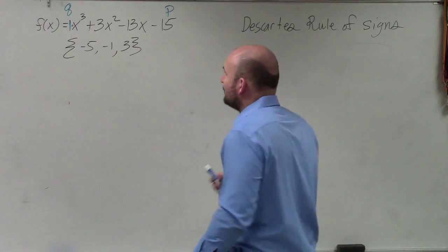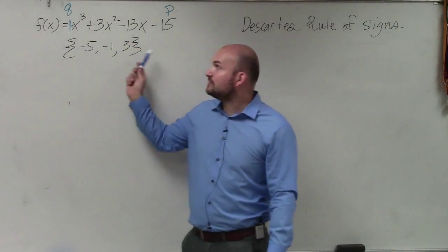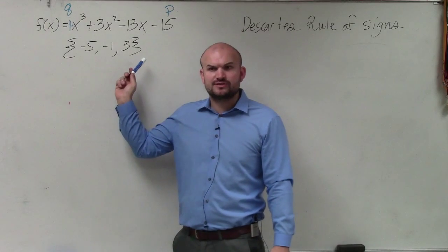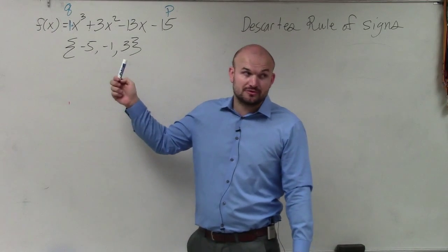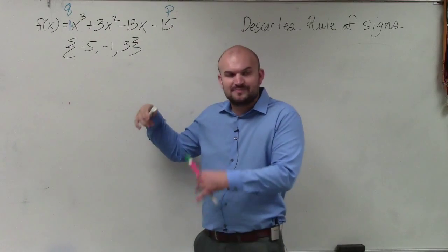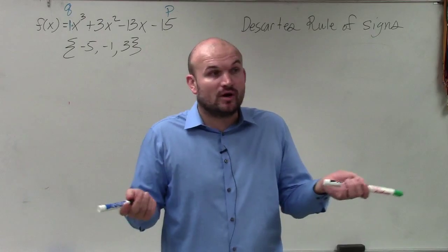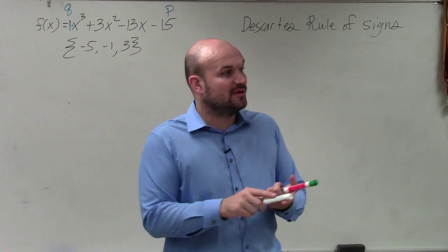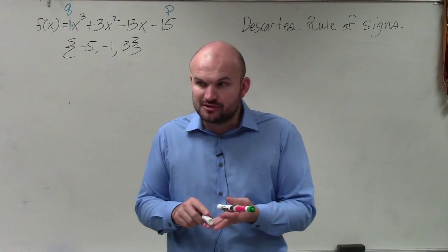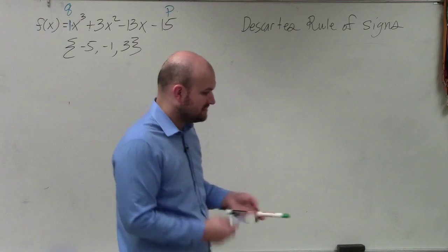Now, in this problem, we have three zeros. All of these zeros are real zeros. So we know there's no complex solutions, correct? But that's because we know what the answer is. Well, what if I give you a problem and I ask you, what are the number of positive, negative, and complex solutions? You'd want to use Descartes' rule of signs.